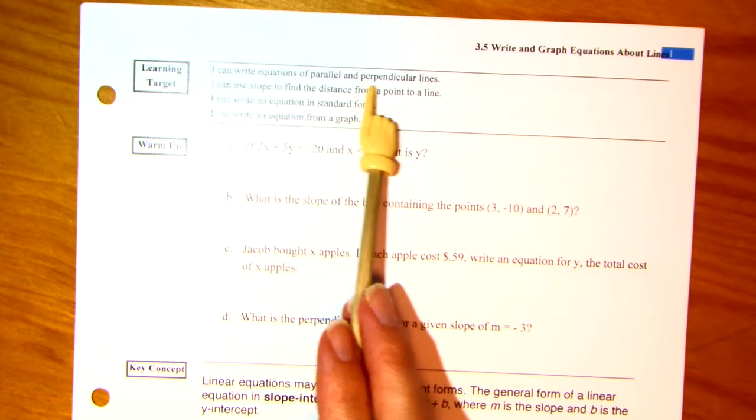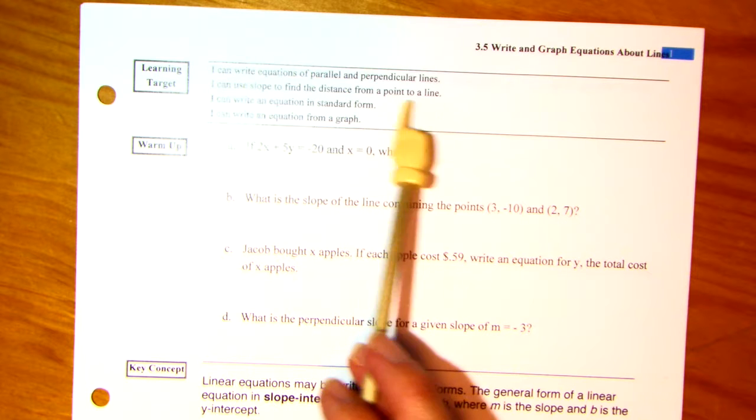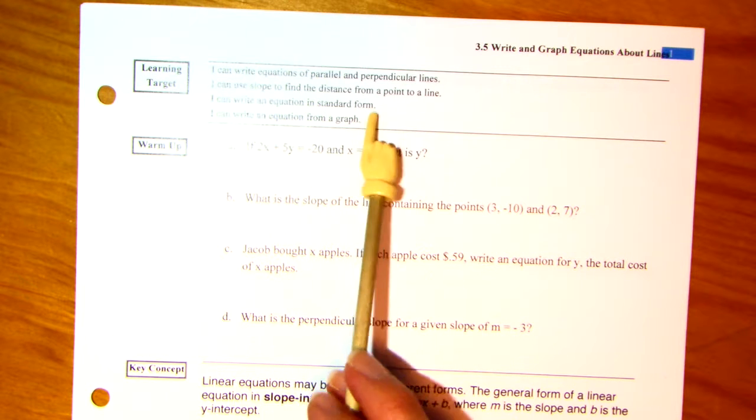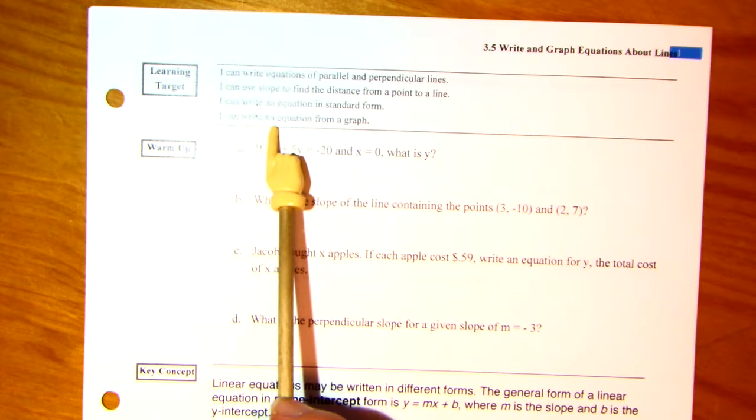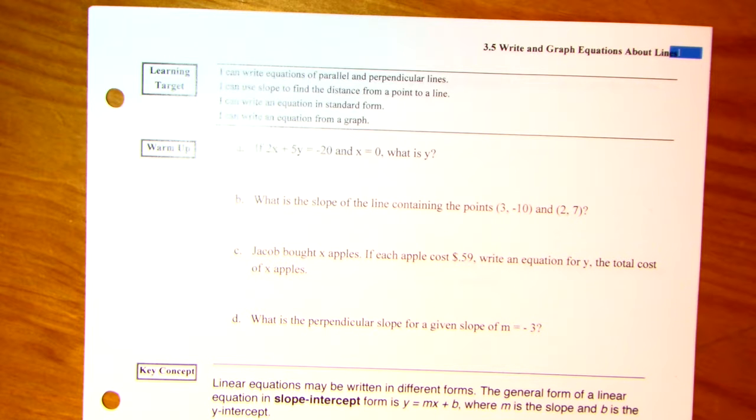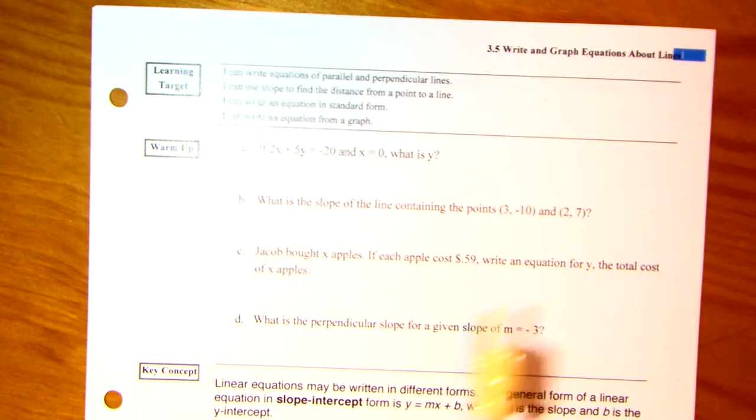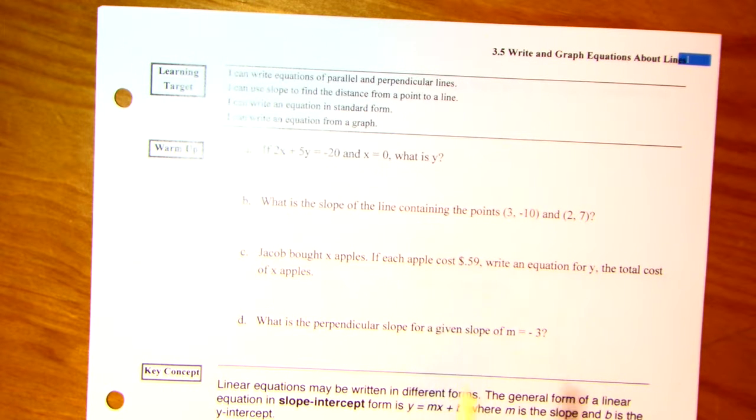I can write equations of parallel lines and perpendicular lines. I can use slope to find the distance from a point to a line. I can write an equation in standard form. This is the one everybody forgets. And I can write an equation from a graph. Alright, so you've had a lot of this last year, so this should be nice, quick, easy breezy. You will get all of this again in algebra 2 and in pre-calculus. It's so important. Okay, so here we go.